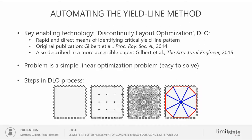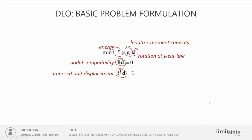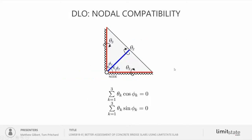You can see that yield line pattern shown on the right-hand side. In terms of the mathematics, we're minimizing energy — a simple energy calculation similar to what you would do by hand. For convenience we apply unit displacement, then enforce compatibility at nodes, ensuring that yield line rotations sum to zero in the x and y directions at every node. So it's actually very akin to resolving forces in a truss, and we use this as an example in The Structural Engineer paper to show that similarity.